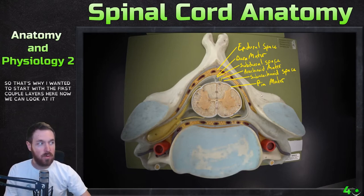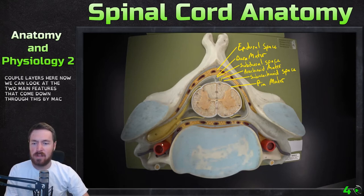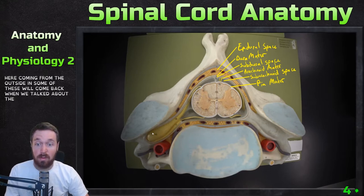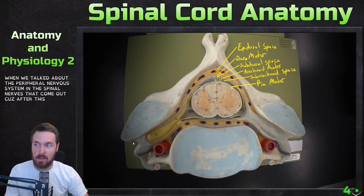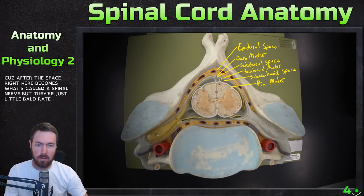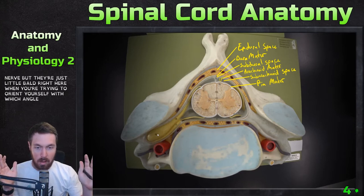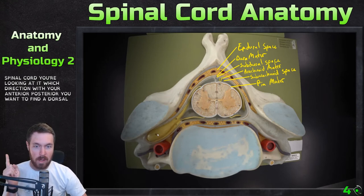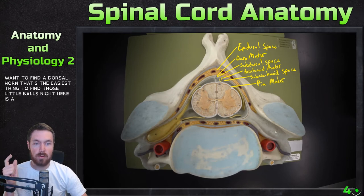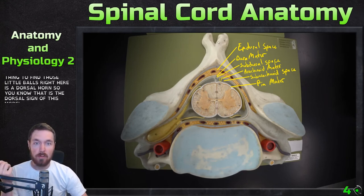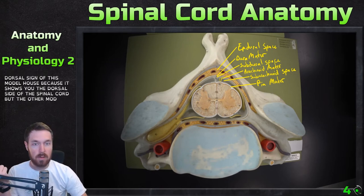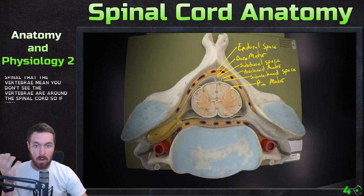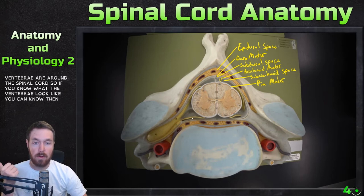Now we can look at the important structures coming from the outside in. Some of these will come back when we talk about the peripheral nervous system and the spinal nerves, because after this space right here it becomes what's called a spinal nerve. There's this little bulge right here — when you're trying to orient yourself with which angle of the spinal cord you're looking at, whether you're anterior or posterior, you want to find a dorsal horn. That's the easiest thing to find. So this little bulge is a dorsal horn, meaning that is the dorsal side. This model helps because it shows you the dorsal side. But with the other model, if you know what the vertebrae look like, you can know the direction of the spinal cord.